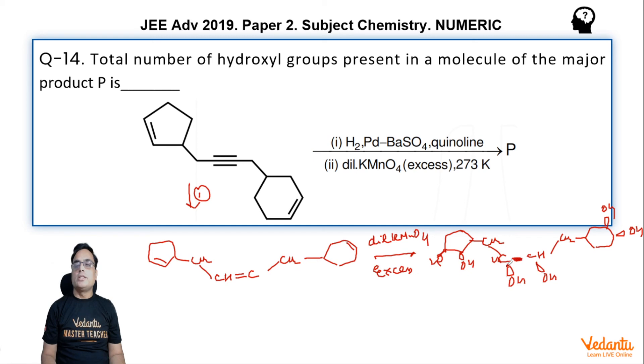But actually they have asked how many total number of OH groups will be present in the final compound P. It is one, two, three, four, five, six. So the answer for this question is six because total number of OH groups present on this final product P will be six. Very simple question. Please stay tuned for the next question.